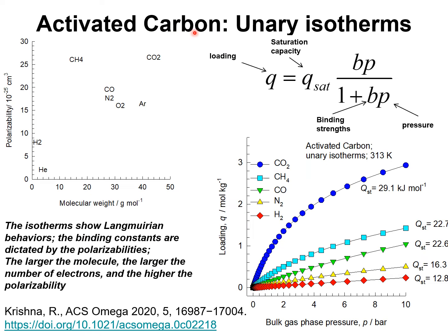Let us consider the use of activated carbon as adsorbent in the PSA technology for hydrogen purification. The data on the unary isotherms are plotted here. The isotherms for each of the individual components in the feed mixture follow Langmuirian behavior, and the binding strength follows the hierarchy: CO₂, methane, carbon monoxide, nitrogen, and hydrogen.